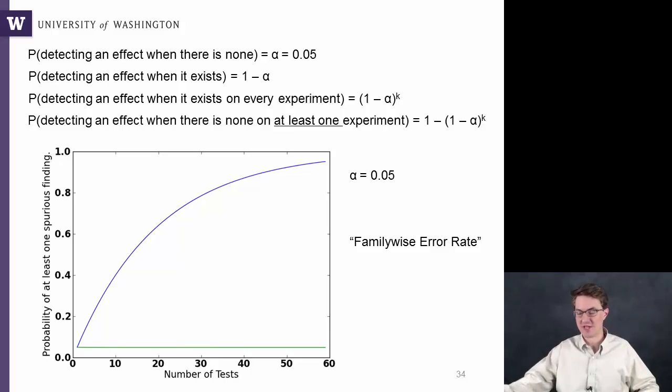If you plot these numbers, on the x-axis here is the number of tests and the y-axis is the probability of at least one spurious finding, making at least one mistake. It goes up like this. As you get up to around 50 hypothesis tests, you're up at the 90% chance of at least one spurious finding.